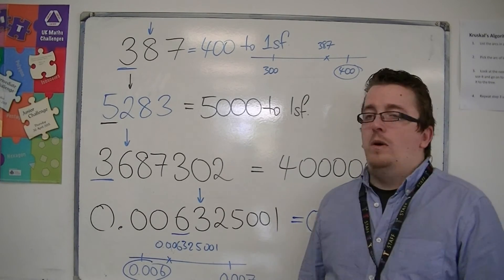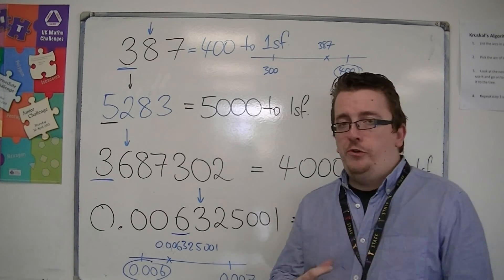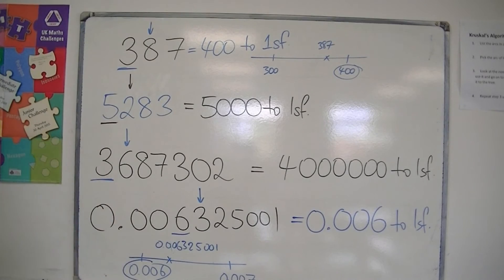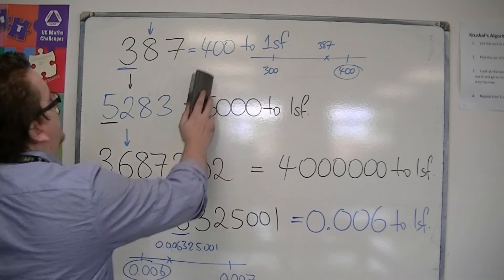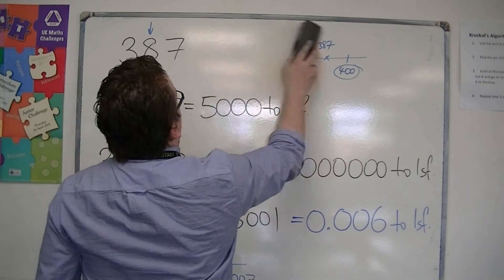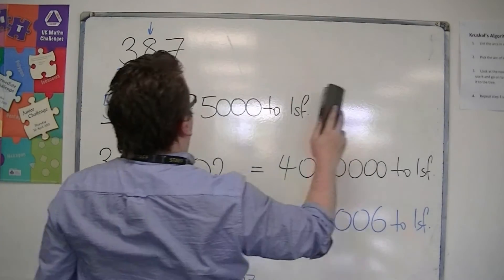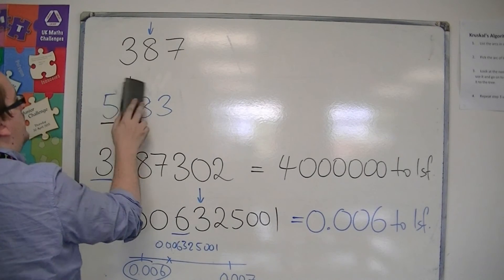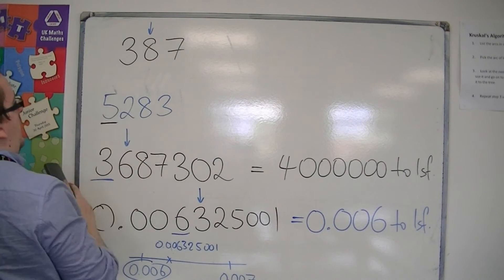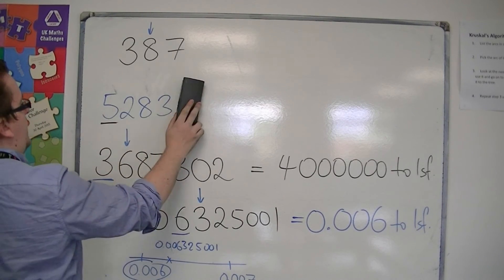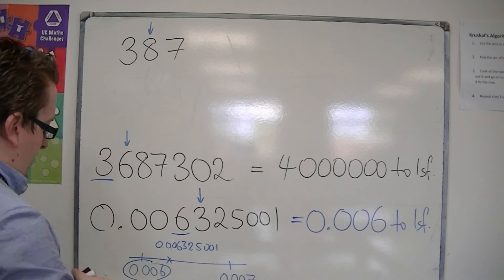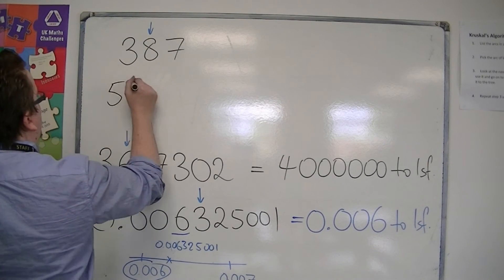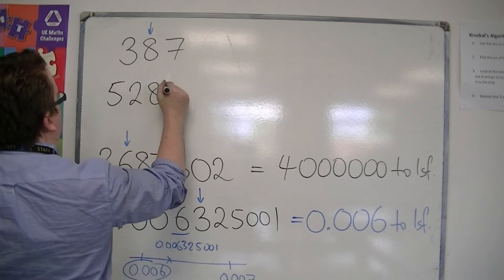What happens when we look to two significant figures? I'm going to stay with the same numbers: 5,283.